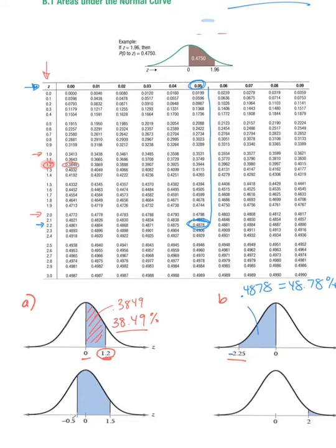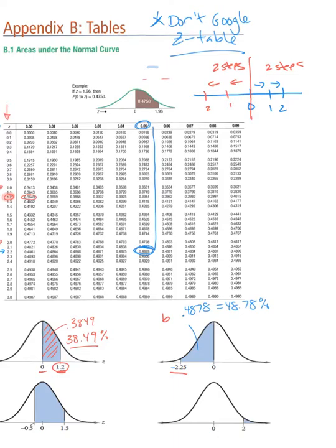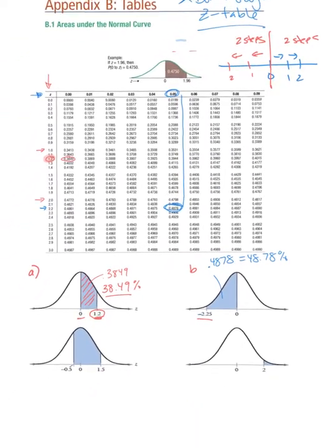Think of it this way: if you're on a number line starting at zero and take two steps to the right, you've traveled two steps. If you take the same two steps to the left, you still travel two steps — the direction doesn't change the distance. You can think of this in exactly the same way when considering area in the normal distribution.